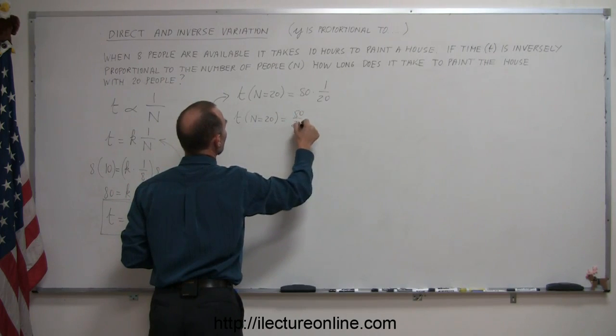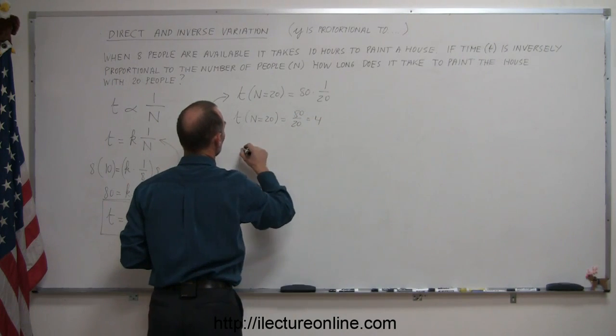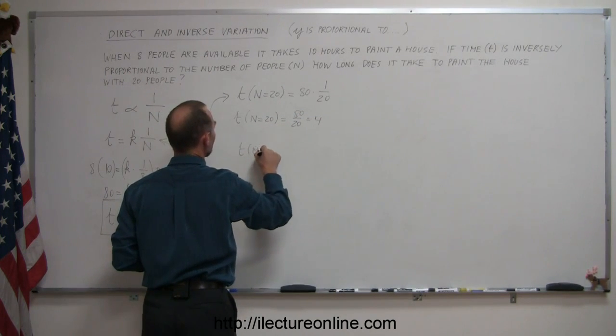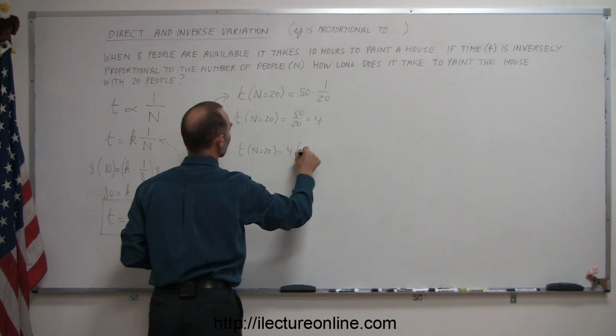divided by 20, which is 4. So t when n equals 20 equals 4 hours.